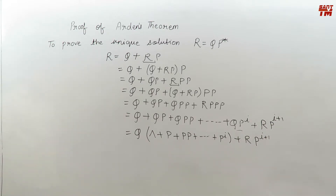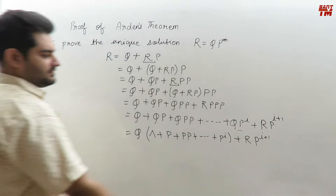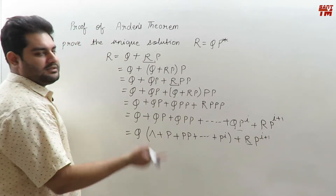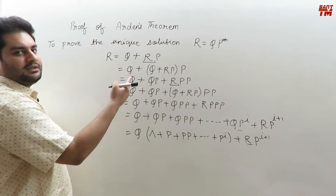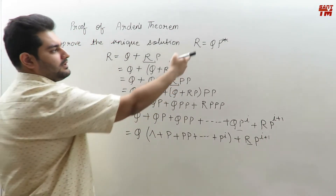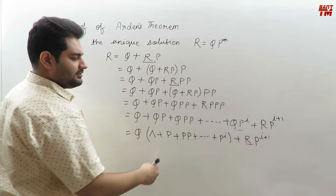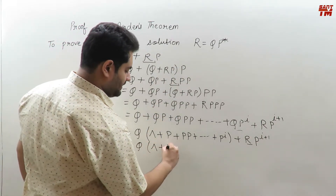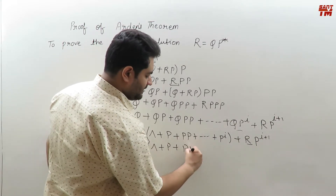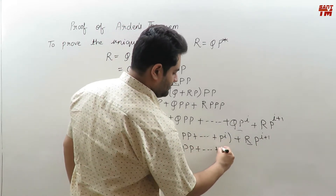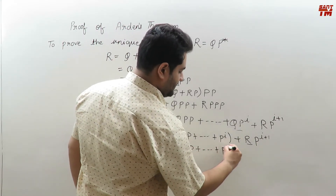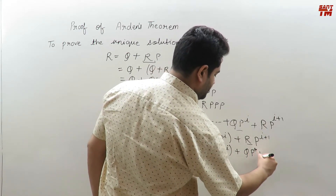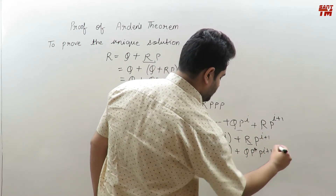Now, in the place of R I will substitute QP-closure, because we just proved — when we assumed Arden's theorem is true — we got this unique solution. So substituting gives: Q·(null + P + PP + ... + P^i) plus QP-closure·P^(i+1).